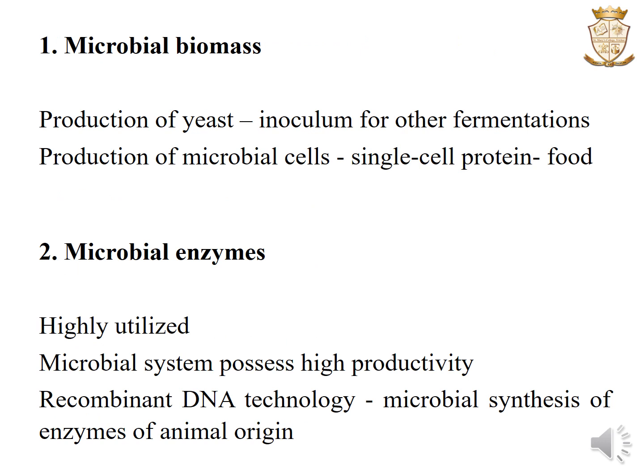In the first type of fermentation — production of microbial biomass — two types may be produced. The first is the production of yeast, where the yeast product is used as inoculum for other fermentations. In the second type, the microbial biomass is used as single cell protein as animal feed or as food for human beings.